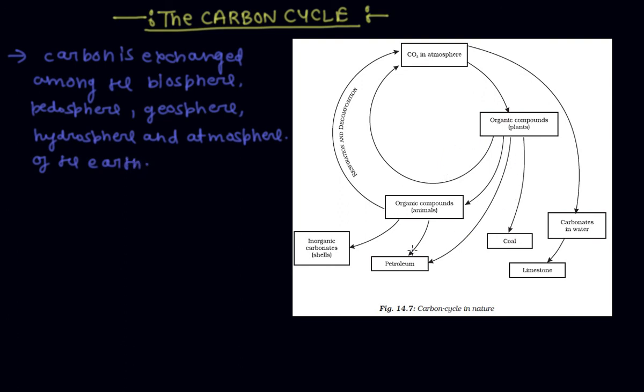The cycle is usually thought of as four major reservoirs of carbon interconnected by pathways of exchange. These reservoirs are: first, the atmosphere; second, the terrestrial biosphere, which is usually defined to include freshwater systems and non-living organic material such as soil carbon;